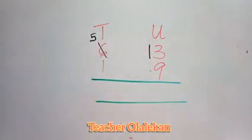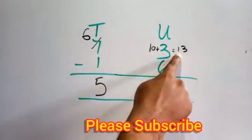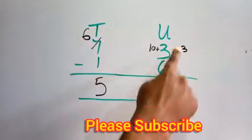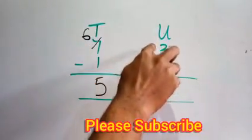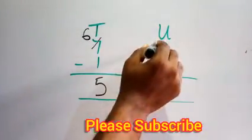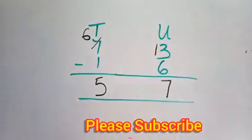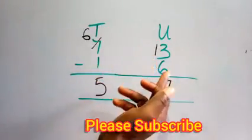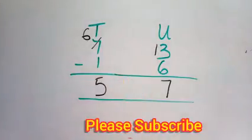Ten units make tens, so when we borrow from tens and give it to units, it becomes ten in units. Instead of writing ten plus three equals thirteen, mathematicians like to just write one beside the three to make it thirteen. So it's the same thing as saying ten plus three equals thirteen, or writing one beside it.